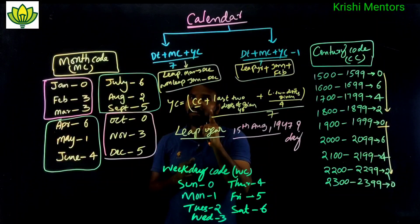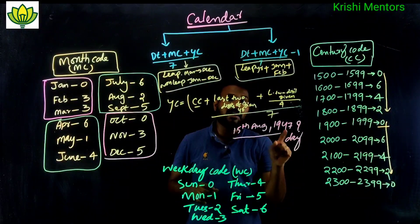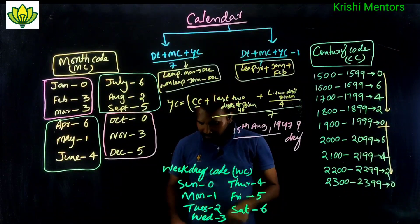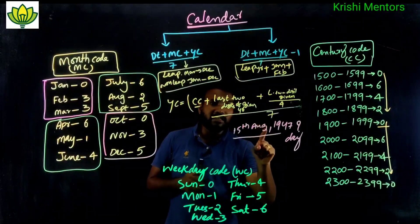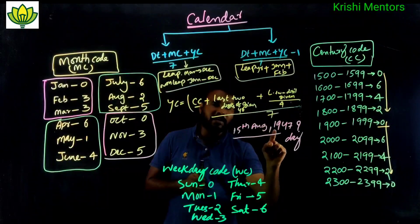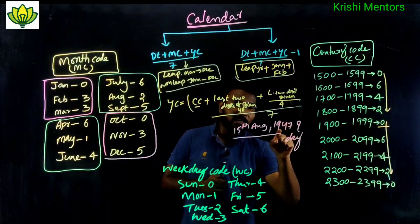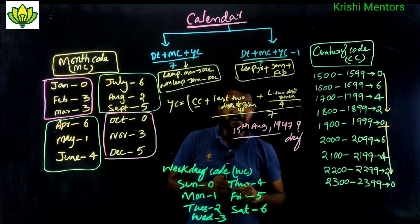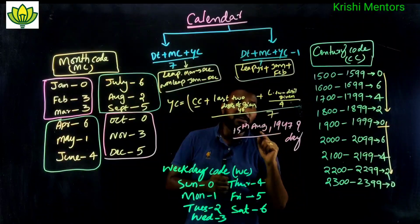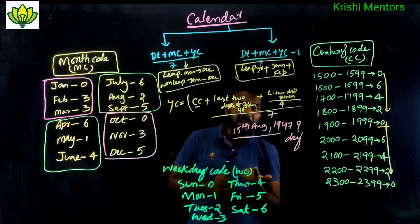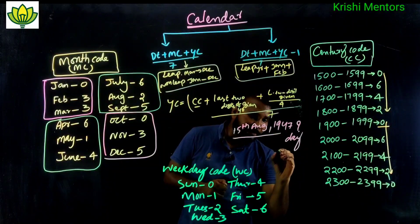It is clear. The example is 15th August 1947. We need to find what day it was. First, check if it is a leap year by dividing the last two digits of the given year by 4.